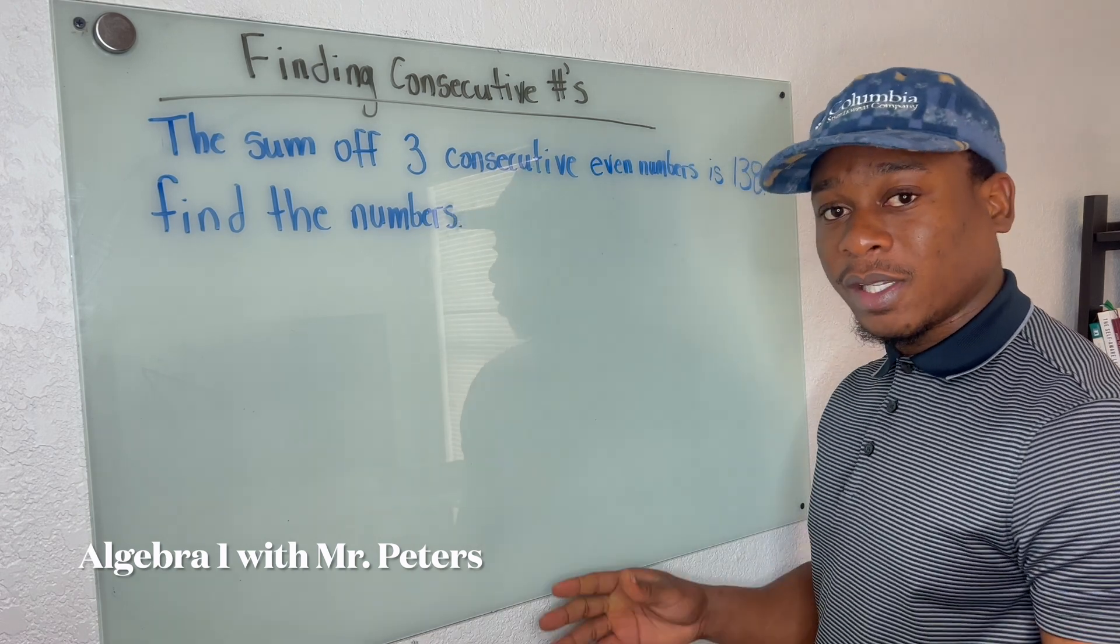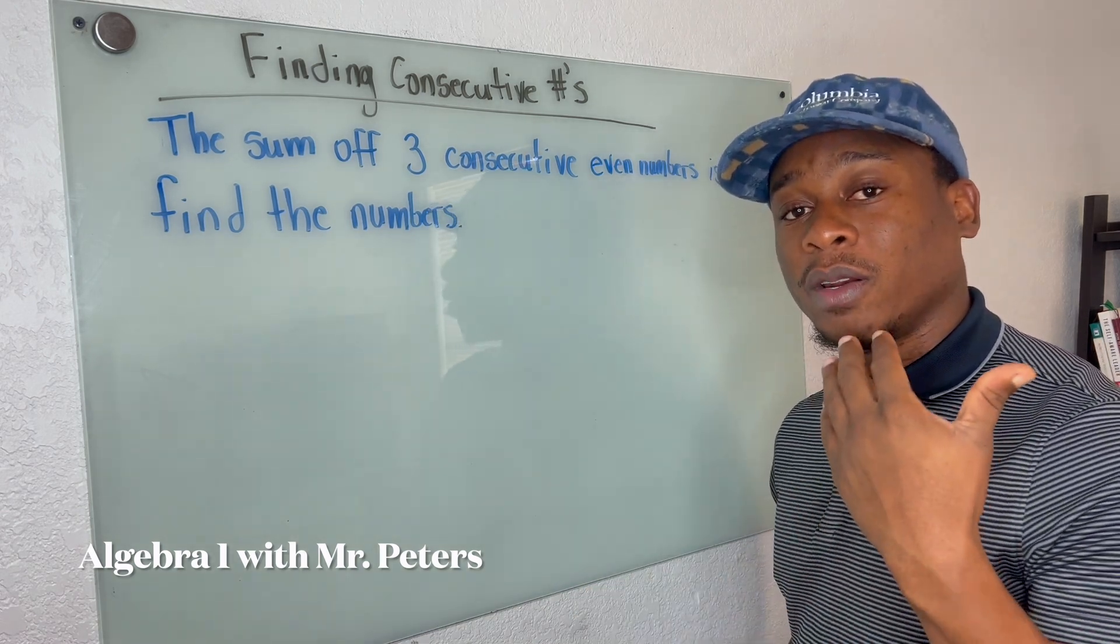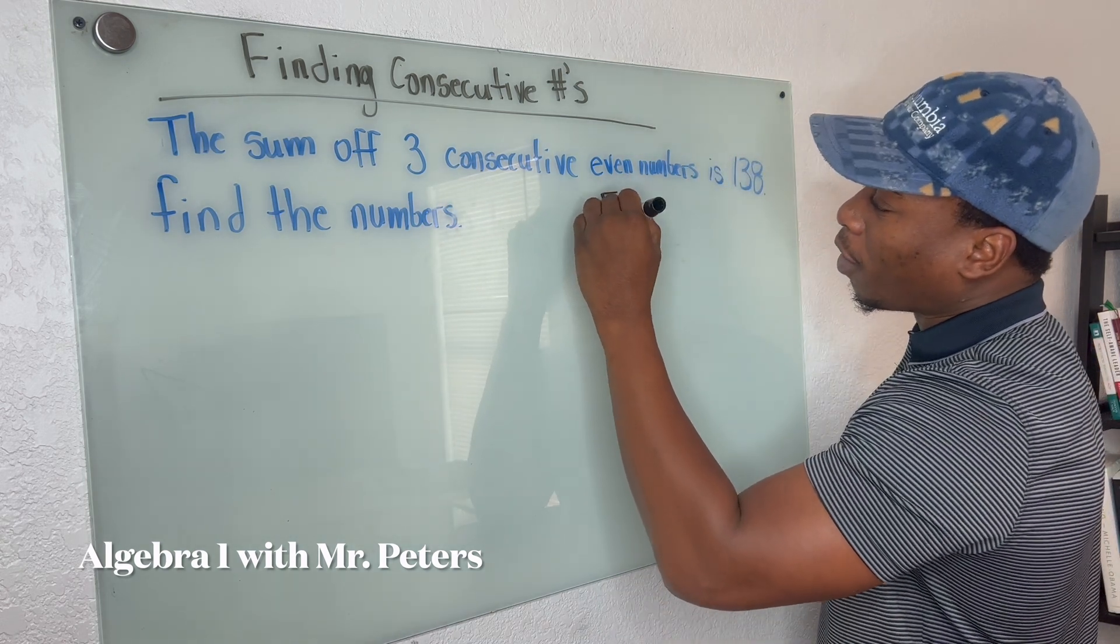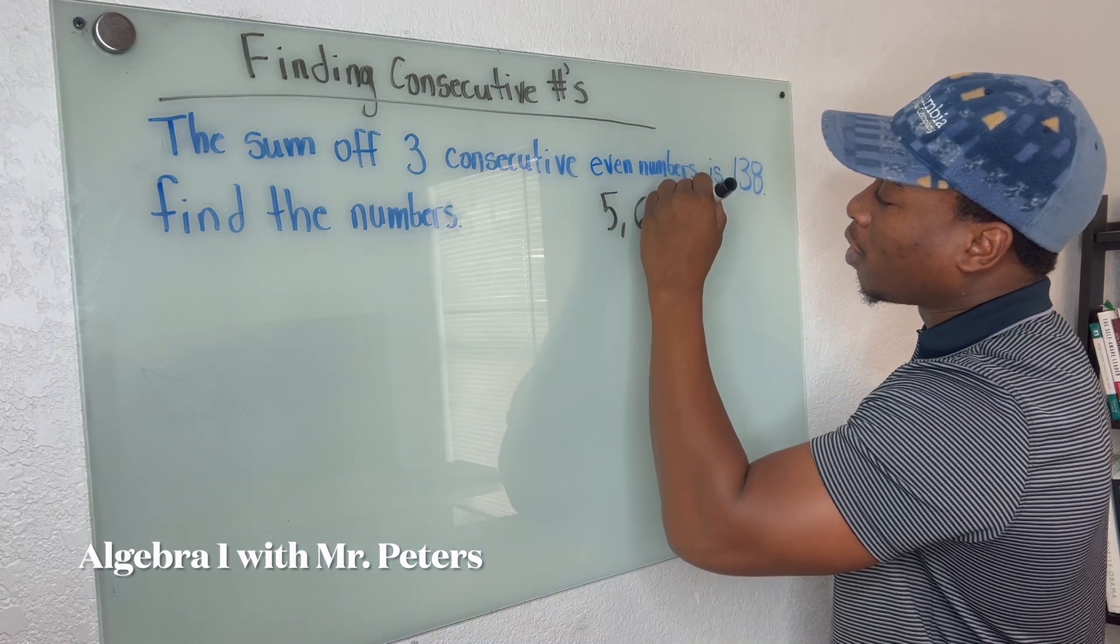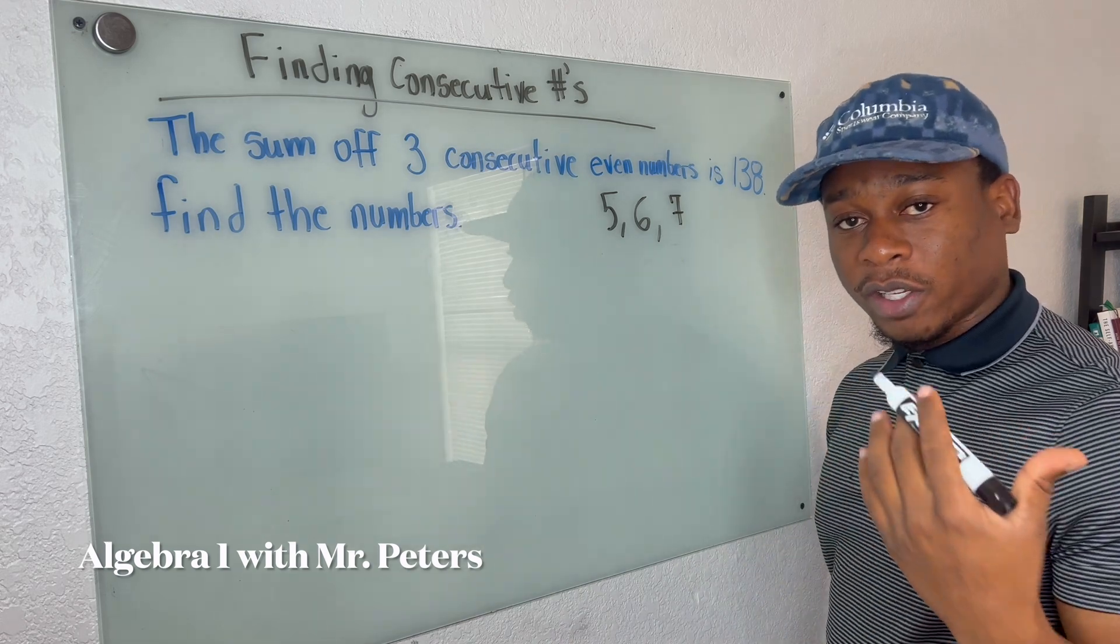So when we talk about consecutive numbers, we're talking about numbers that are next to each other. So we're talking about five, six, and seven. These are consecutive numbers.